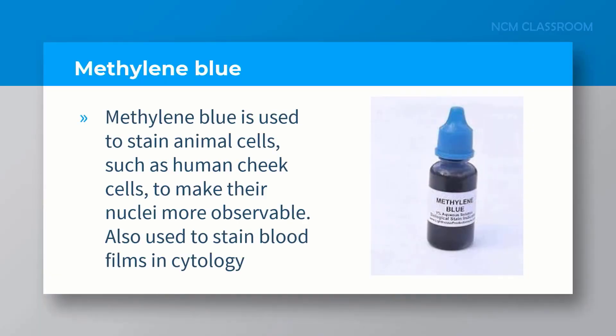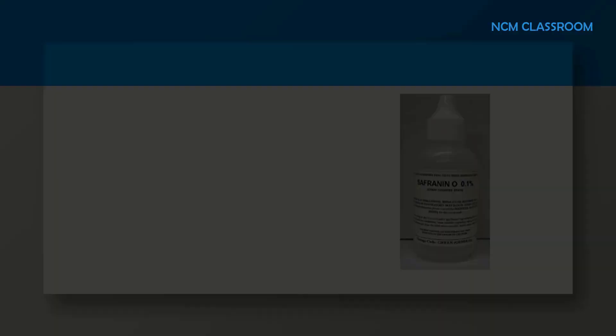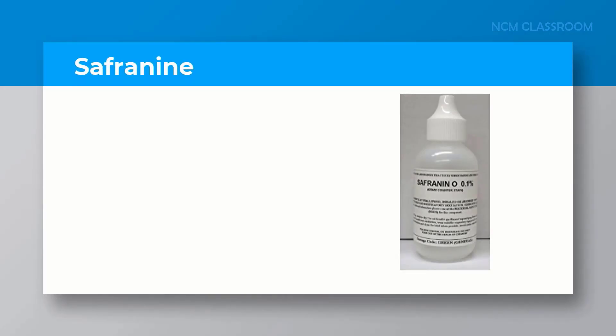Methylene blue is used to stain animal cells such as human cheek cells to make the nuclei more observable. Also used to stain blood films in cytology.